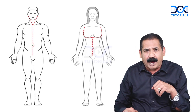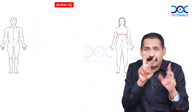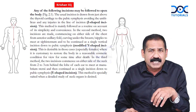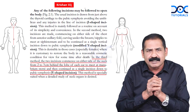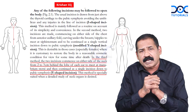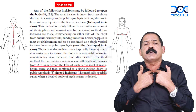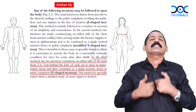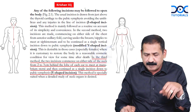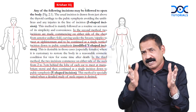That's what I teach, and many times people say, 'No sir, it is the opposite — you are wrong.' See what Dr. Christian's textbook says exactly: 'The third method — the two incisions commence on either side of the neck, from 2 to 3 centimeters behind the lobe of the ear, to each meet the manubrium sternum, and then continued as a single incision down to the pubic symphysis' — that is the Y-shaped incision.